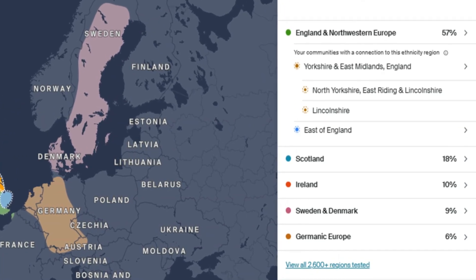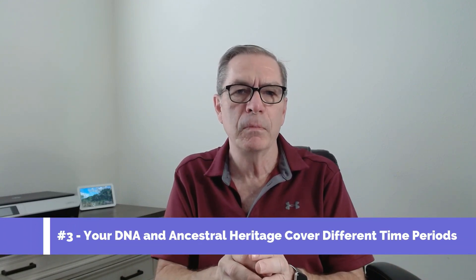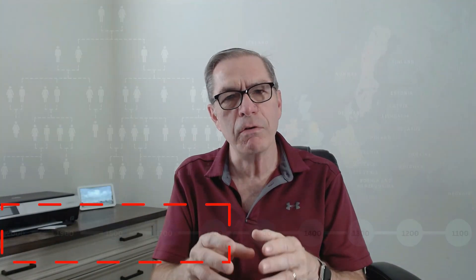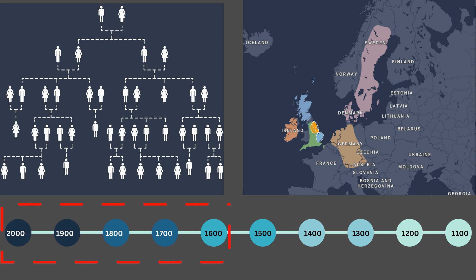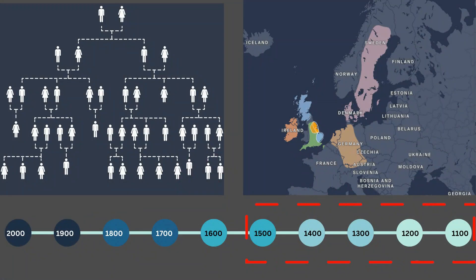Most importantly, your DNA and your ancestral heritage — which is based on your research — cover different historical periods. Typically, most people's ancestral heritage does not go back much more than about 400 years; some people go back further, but it won't be on every line. DNA heritage most likely indicates your heritage and ethnicity between 400 and 1,000 years ago. So your DNA heritage will predate your ancestral heritage.